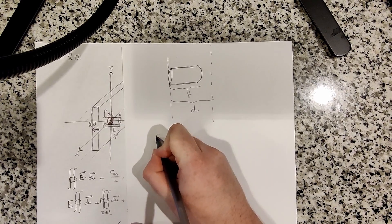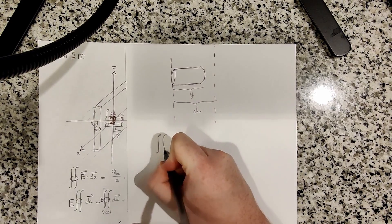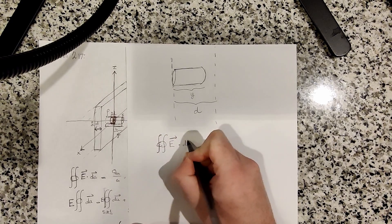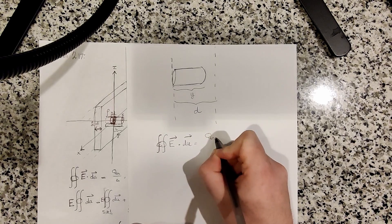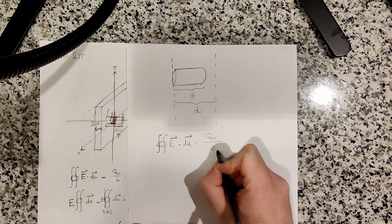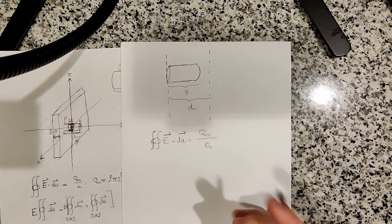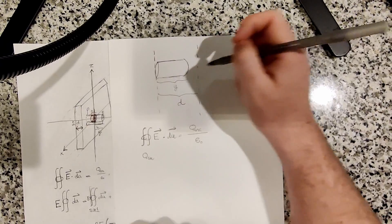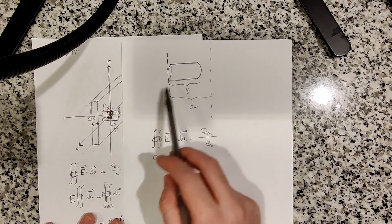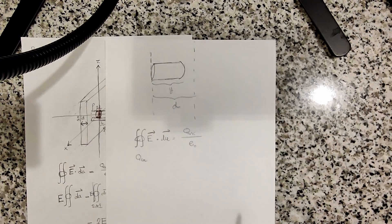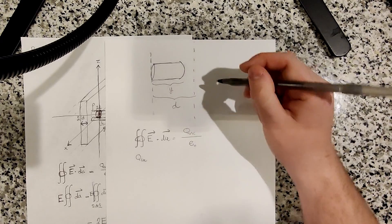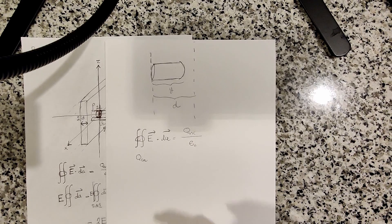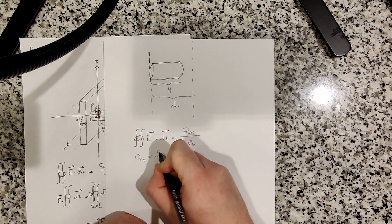Let's write Gauss's law down: E dot dA equals the charge enclosed divided by epsilon naught. Now what is the charge enclosed? Well, the charge enclosed is the charge enclosed in our Gaussian surface. Since it's uniform charge density, that makes it easy. It's really just the charge density times the volume enclosed in our Gaussian surface, right?